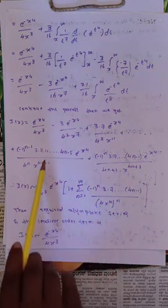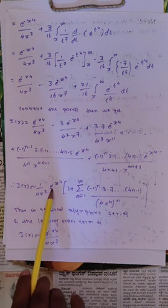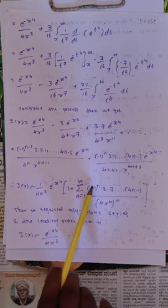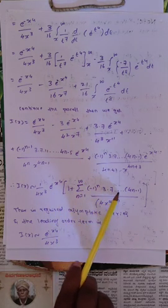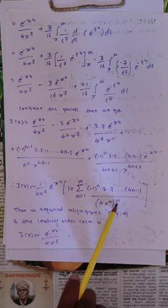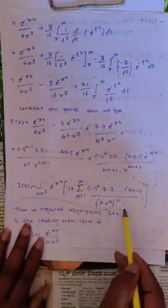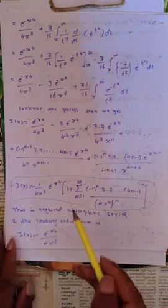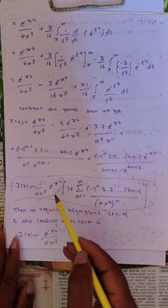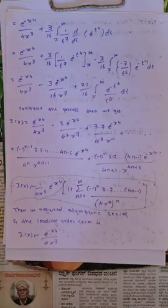So this can be written as: I(x) is approximately equal to 1/(4x³) times e^(-x^4) times the quantity 1 plus summation from n=1 to infinity of (-1)^n times 3·7···(4n-1) divided by 4^n times x^(4n). This is the required asymptotic series. If you want the leading order term, it is 1/(4x³) times e^(-x^4). Thank you.